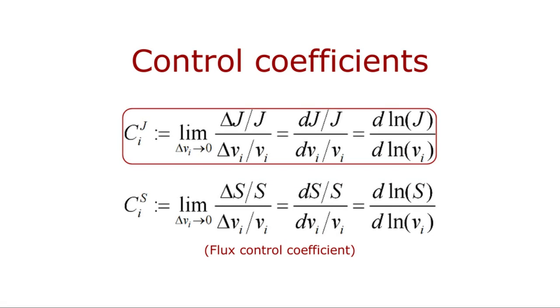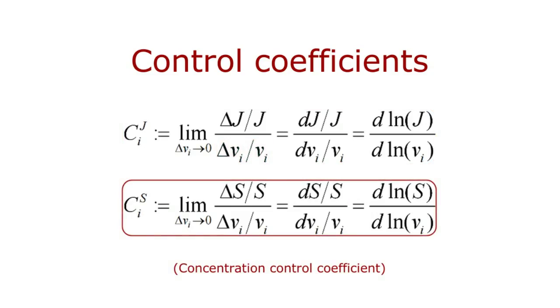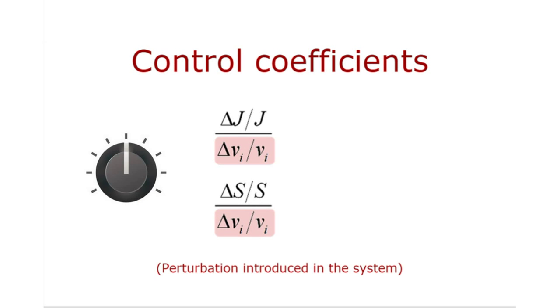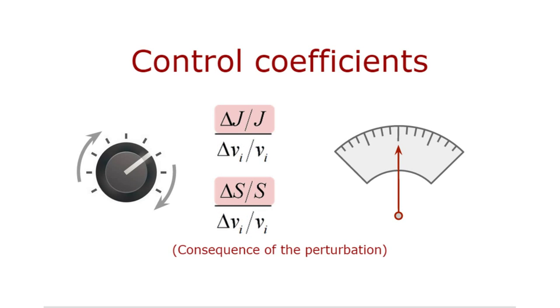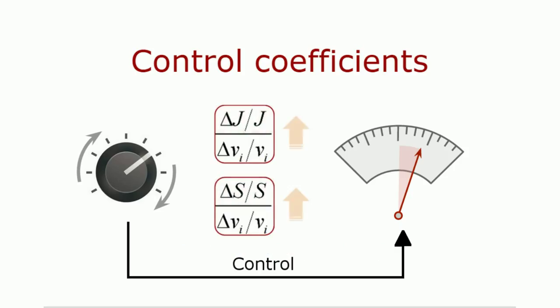The flux control coefficients are defined as the ratio between the relative change in the steady state flux carried by some reaction, and the relative change in the activity of the enzyme we have perturbed. Likewise, the concentration control coefficient is defined as the ratio between the relative change in the steady state concentration of a species, and the relative change in the activity of the enzyme perturbed. In both cases, the change in the enzyme activity must be understood as the perturbation we introduced in the system, while the change in the variable, either flux or concentration, is a consequence of such perturbation. The higher the control coefficient, the higher the control that the enzyme exerts on that variable.